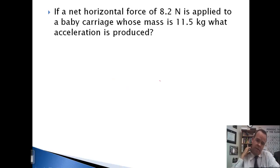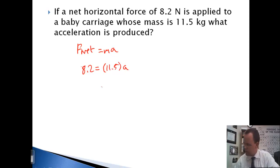The net horizontal force of 8.2 newtons is applied to a baby carriage whose mass is 11.5 kilograms. What acceleration is produced? F net equals MA. 8.2 equals 11.5 a. A comes out to 0.713 meters per second squared.